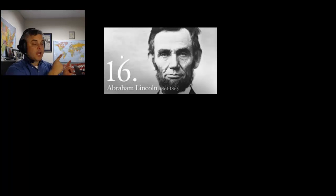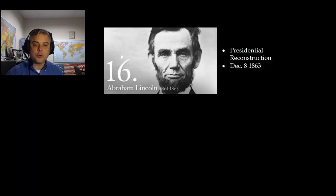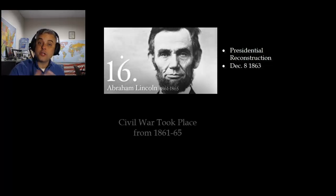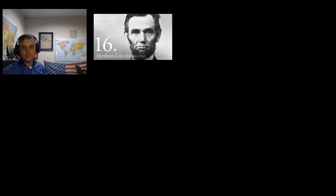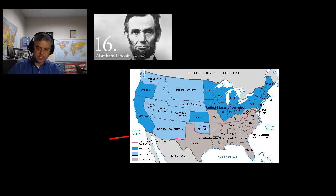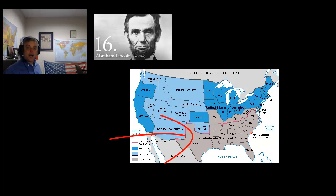This guy right here, in 1863 — December 8th — issued what would be known as the Presidential Plan for Reconstruction. So while the Civil War is still going on, he's beginning to make plans for Reconstruction. The objective of Lincoln's plan was to get the people from the seceded states back into their normal relations with the federal government as quickly as possible.